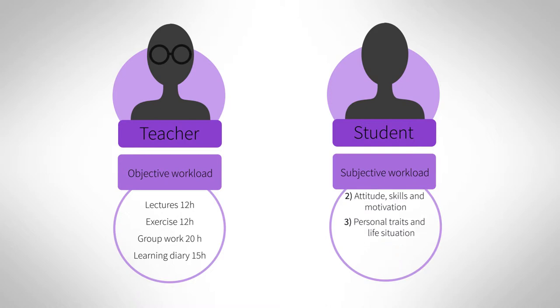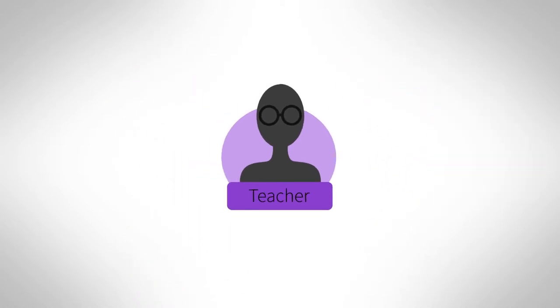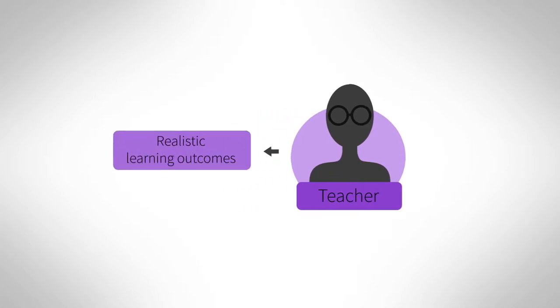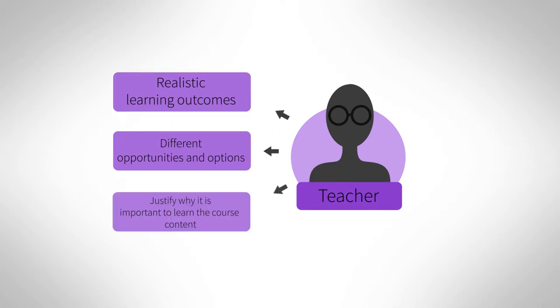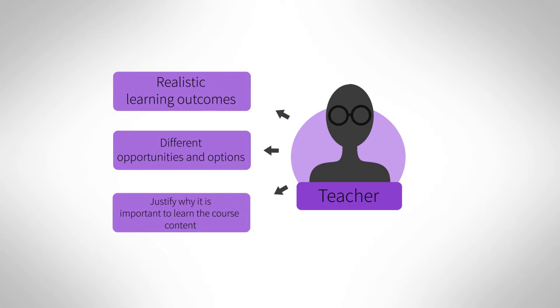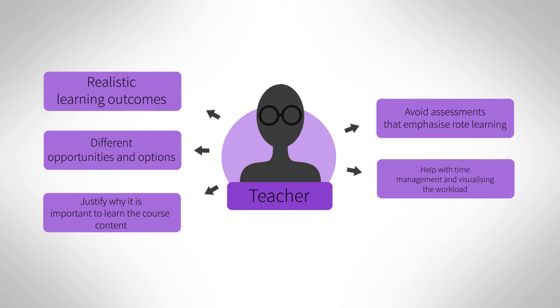While a teacher cannot control all of these factors, there are some things that can be considered in teaching to reduce the perceived workload. As a teacher, you can support your students' motivation by setting realistic learning outcomes. Provide different kinds of opportunities and options for completing the course. Justify why it is important to learn the course content, for instance by providing examples of how the content can be applied in practice. Avoid or reduce assessments that emphasize rote learning and committing small details to memory. Help students with time management and provide visualization of the time that will be needed to complete each assignment during the course.